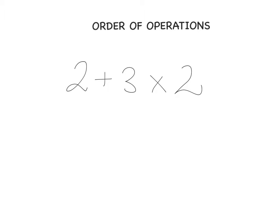So we have multiplication here and we have addition. What to do first? One of you might say we need to do it from left to right — addition first. So let's see: 2 plus 3 is 5, multiplied by 2 gives you 10.